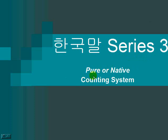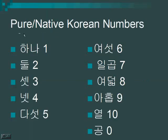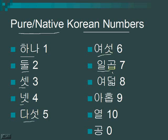The first one I want to talk about is the pure or native counting system. The other one is called Sino or Chinese Korean. The pure native one sounds like this: 하나, 둘, 셋, 넷, 다섯, 여섯, 일곱, 여덟, 아홉, 열. And 공 — 공 is actually part of the other system, however most Koreans just use 공 for zero generally.